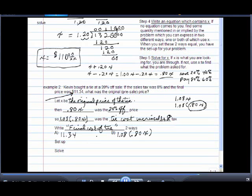Now both of these are the final cost of the tie, so they have to be equal. So the setup equation is $11.34 has to be equal to 1.08 of .80x.